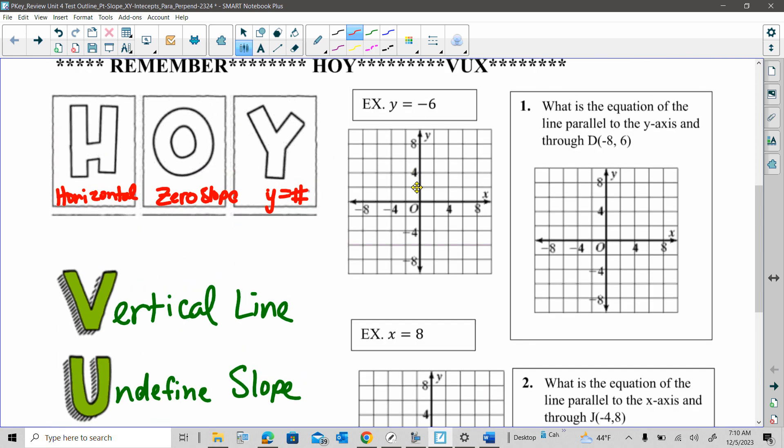So we did a problem like this on the quiz to check your understanding. Hopefully you realize you're just putting a point where y equals negative six, and then a horizontal line goes through it. For something like this on number one, you have to pay attention to the key information. The keywords here are parallel to the y-axis through the point negative eight, six. So if I'm going to be parallel to the y-axis, the y-axis is a vertical line. So what I do is go to the point negative eight, six, and plot that point.